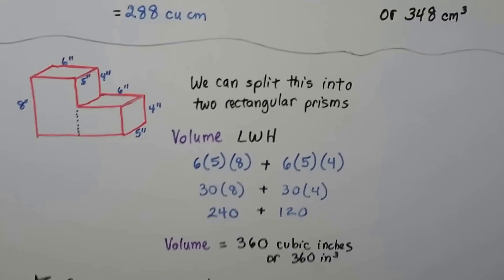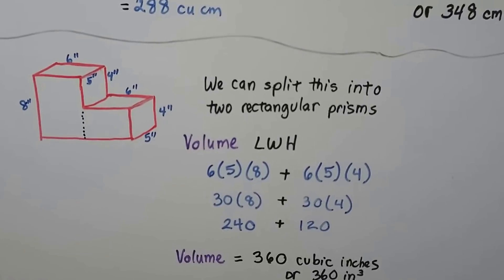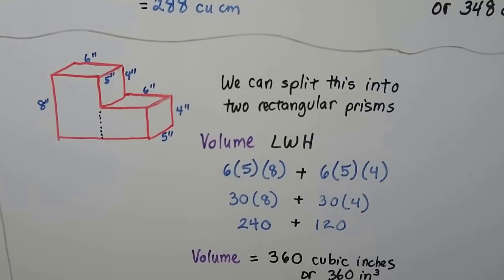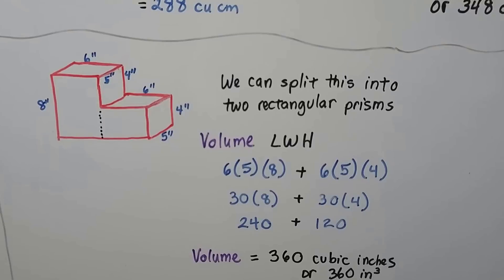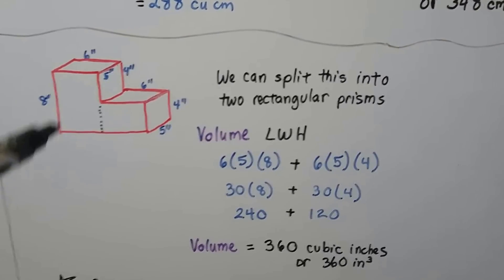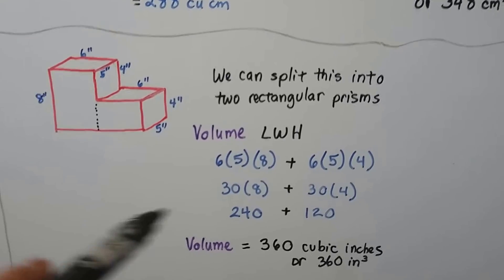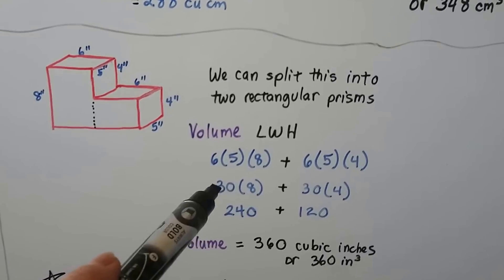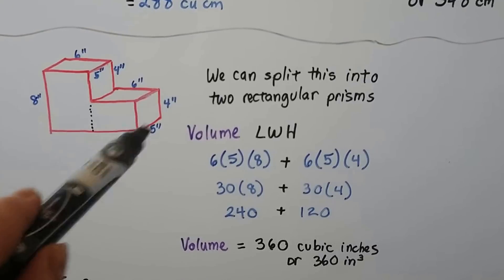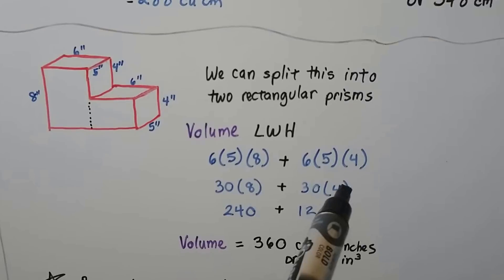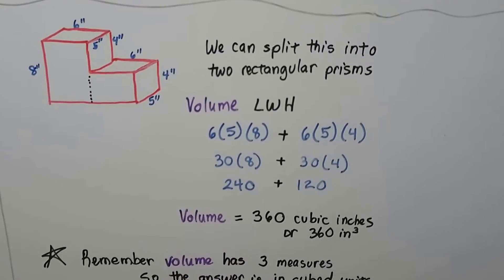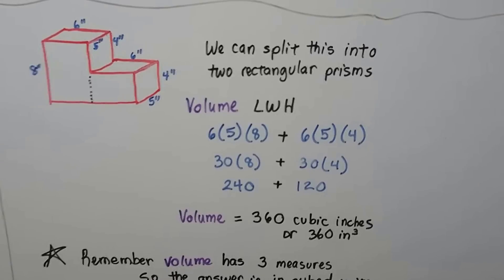This one kind of looks like stairs. We can split this into two rectangular prisms by putting an imaginary line here. The volume is length times width times height, so we do 6 times 5 times 8 for this one. That's 30 times 8, or 240. We do 6 times 5 times 4 for this one, which is 30 times 4, or 120. We add them together and get 360 cubic inches, or 360 inches cubed.